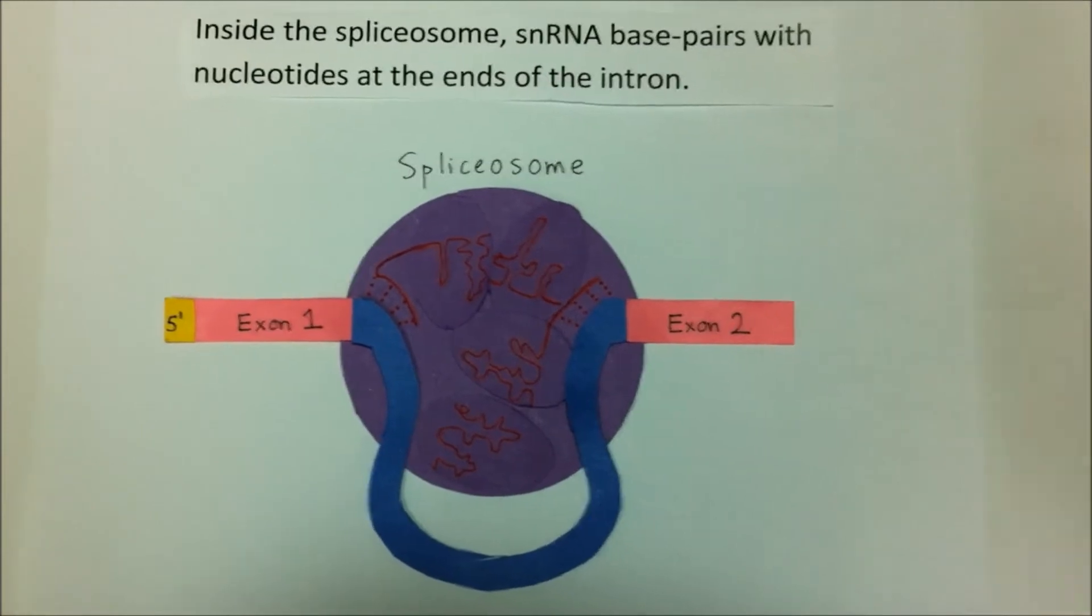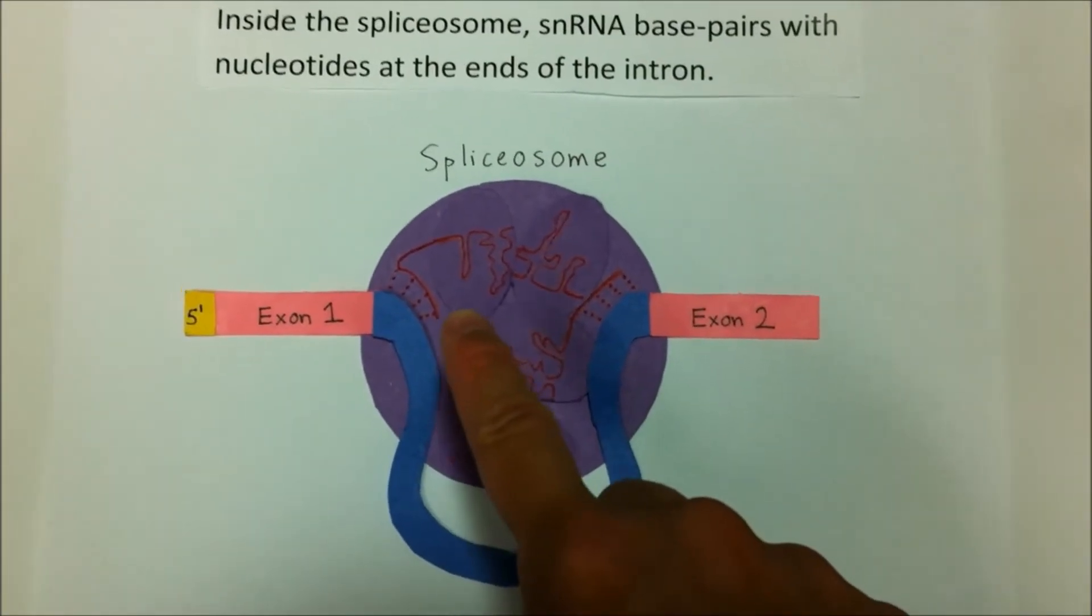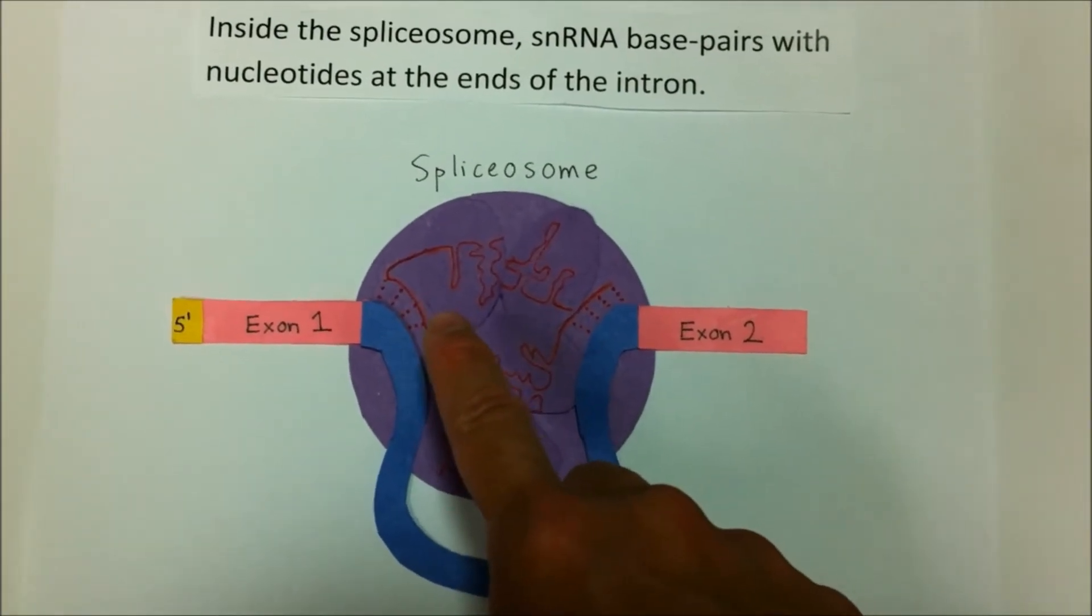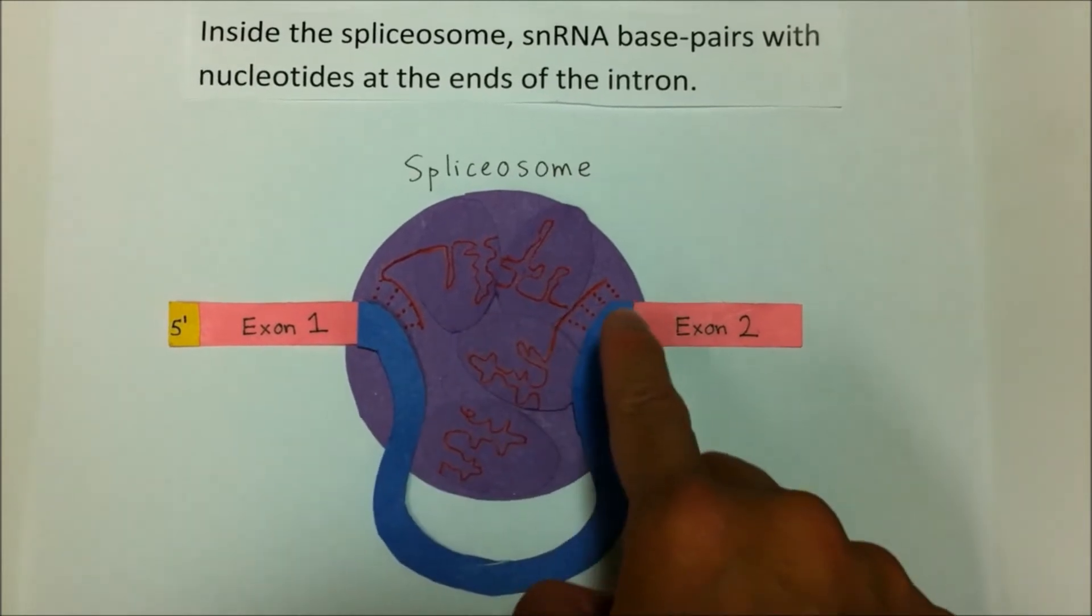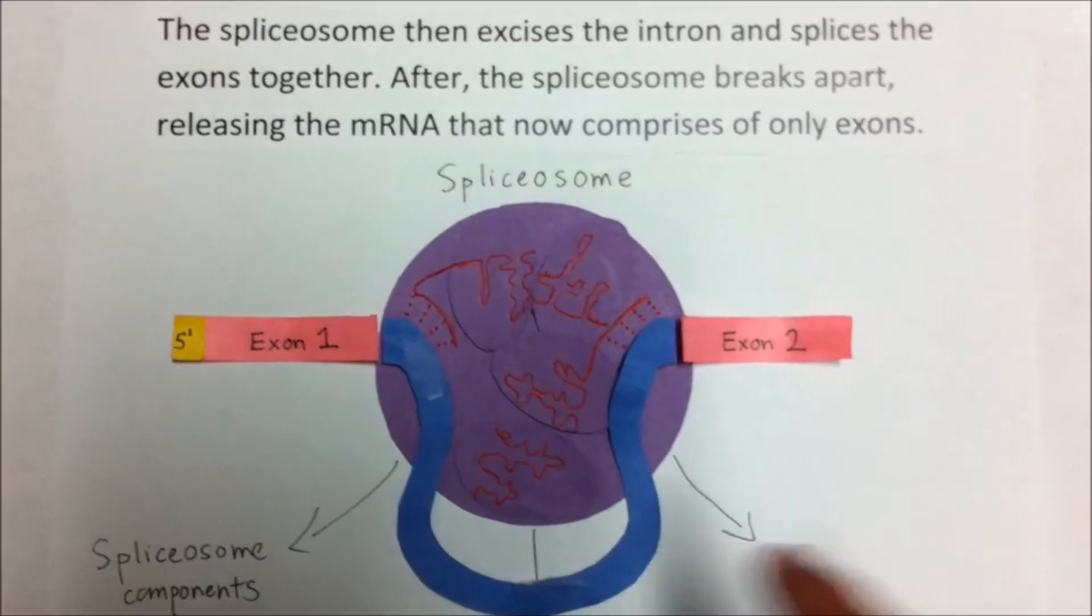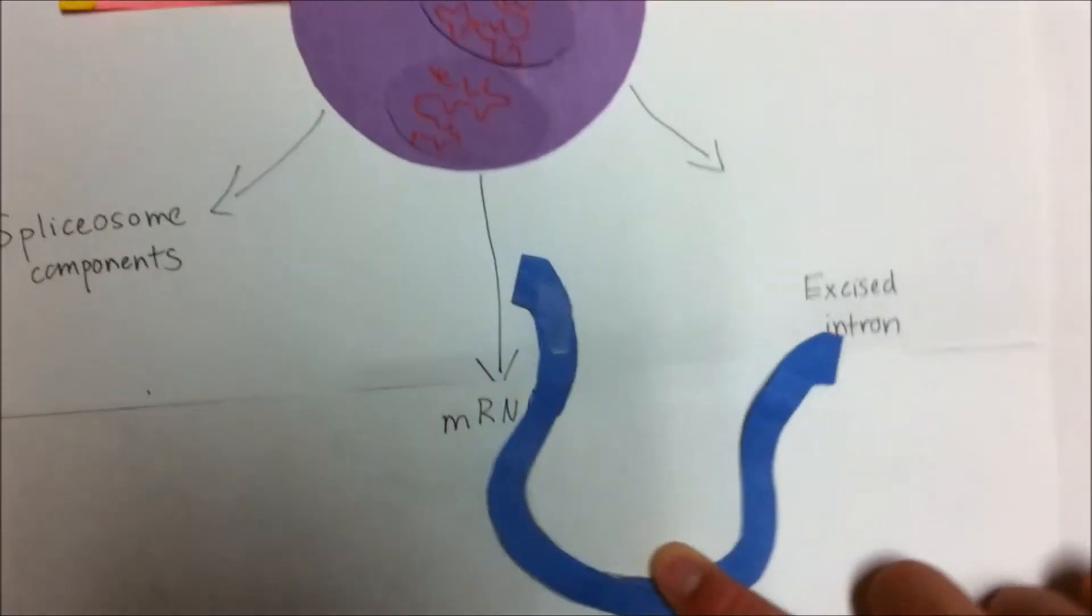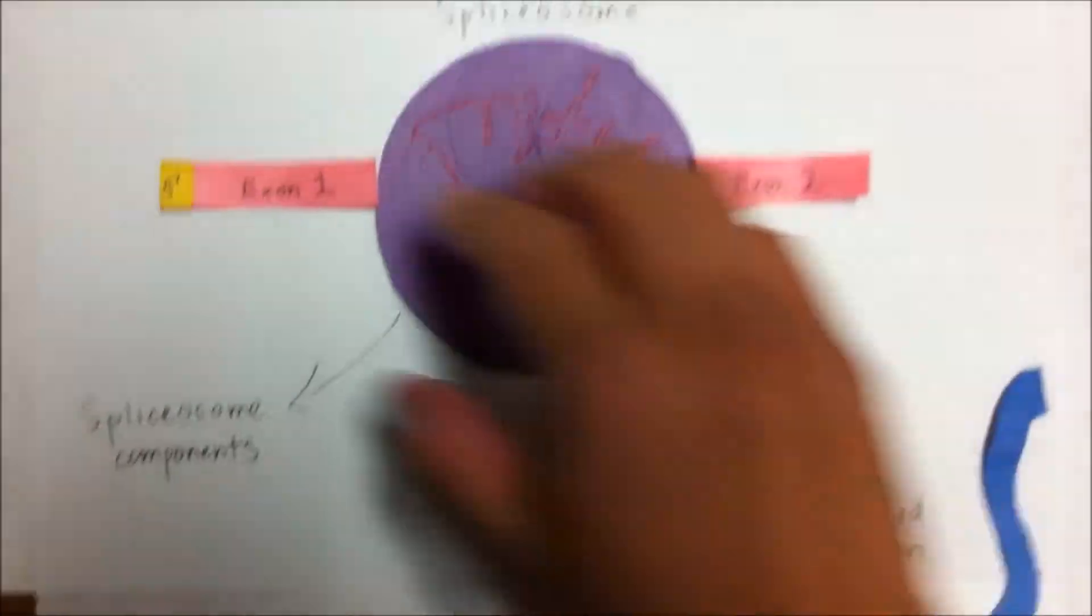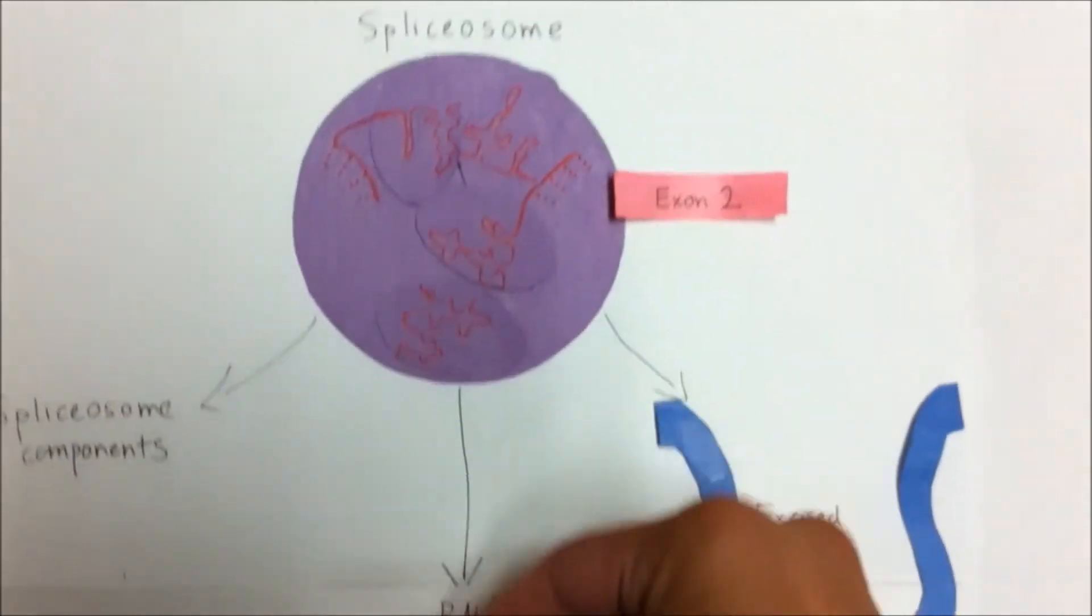Inside the spliceosome, snRNA base pairs with nucleotides at the ends of the intron. The spliceosome then excises the intron and splices the two exons together.